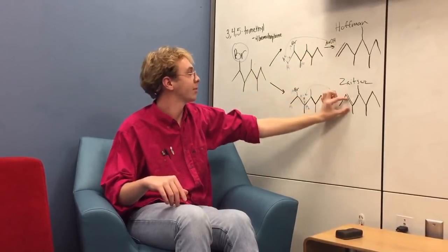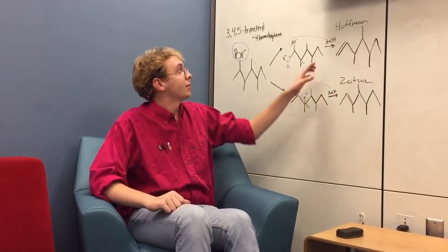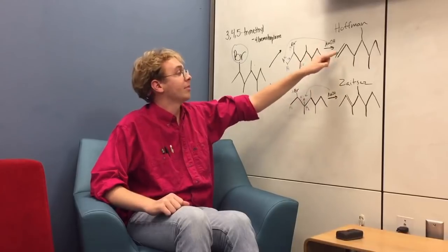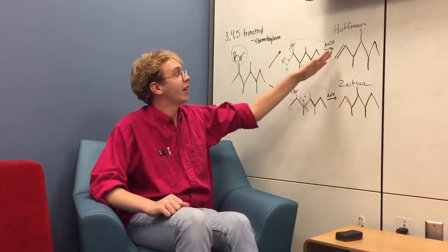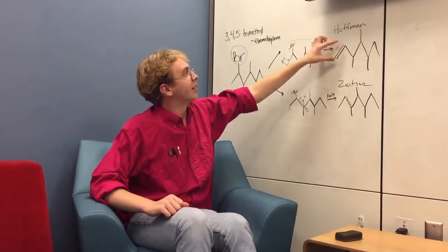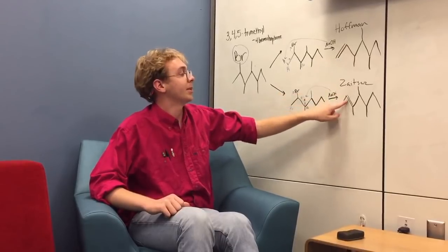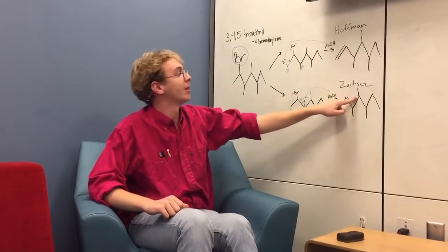So there's the pi bond, there's a pi bond. You following? Anyways, this forms two different products, either the Hoffman or the Zaitsev product. And the Hoffman product is less common, and it forms with the least substituted carbon, so it has the least number of bonds. And this is the most substituted carbon, because it's got the most number of bonds.